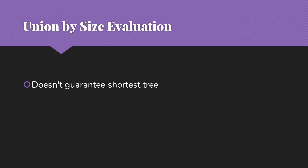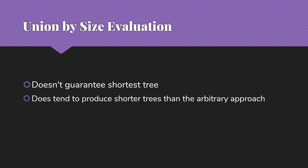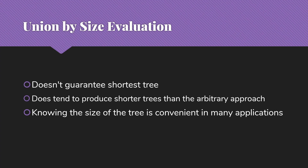Union by size is not going to guarantee the shortest tree. There are times when we may end up with a taller tree that has fewer items than a larger tree — we'd point the taller, fewer-items tree at the shorter, many-items tree, which won't give us the best result in terms of height. So it's not perfect, but it does tend to produce shorter trees than the arbitrary approach. And knowing the size of the tree is convenient.